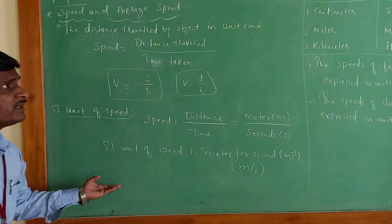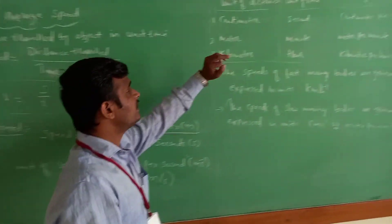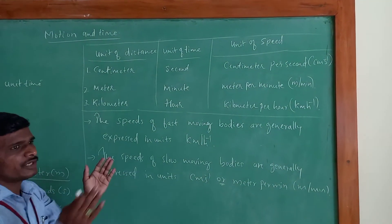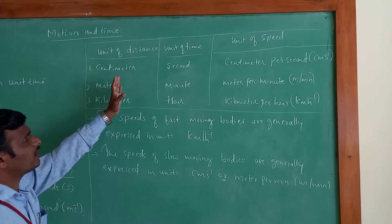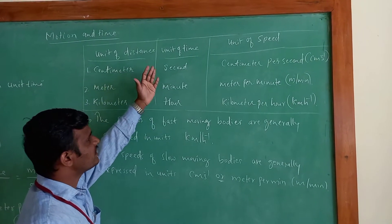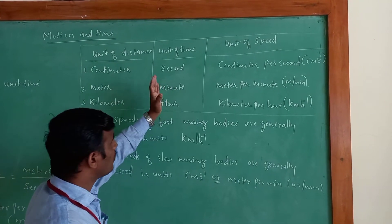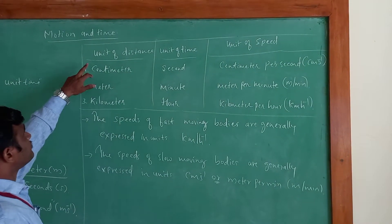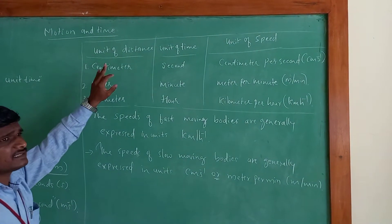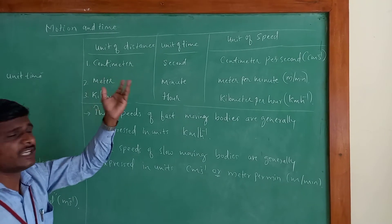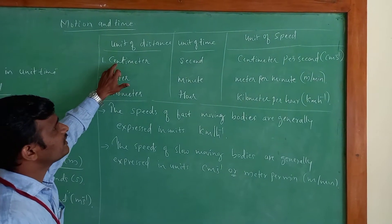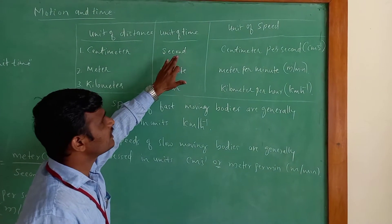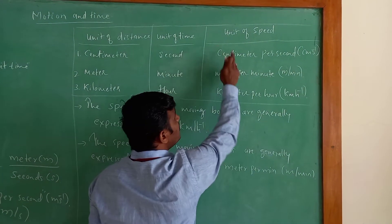So these are the various units of speed: centimetre per second, metre per minute, metre per second, and kilometre per hour. The SI unit of speed is metre per second — that you must remember. The speed of a fast-moving body is generally expressed in terms of kilometre per hour.